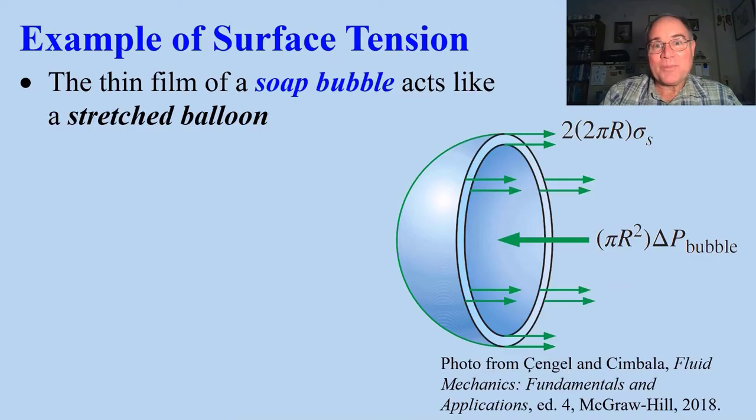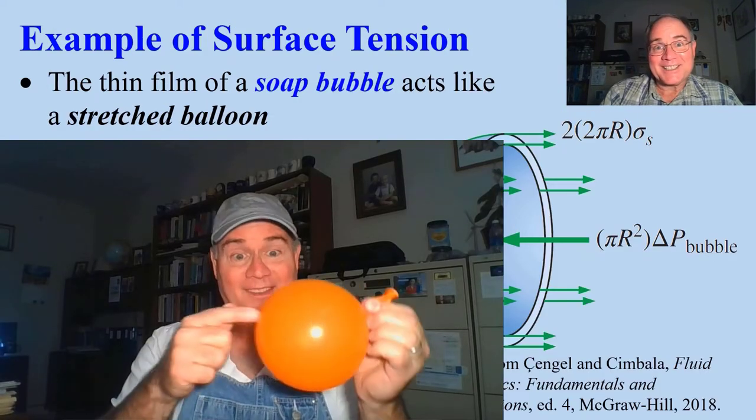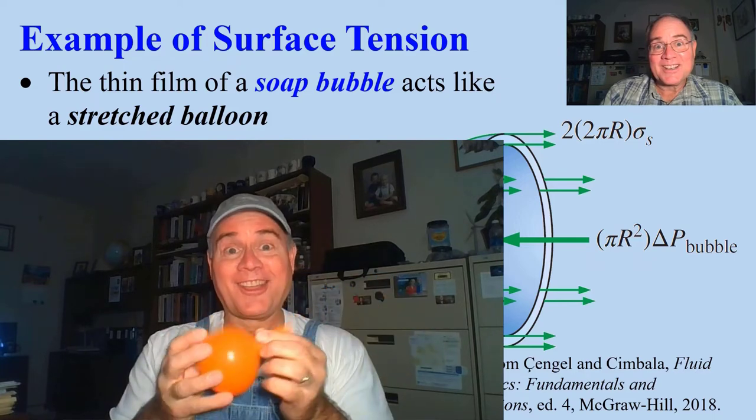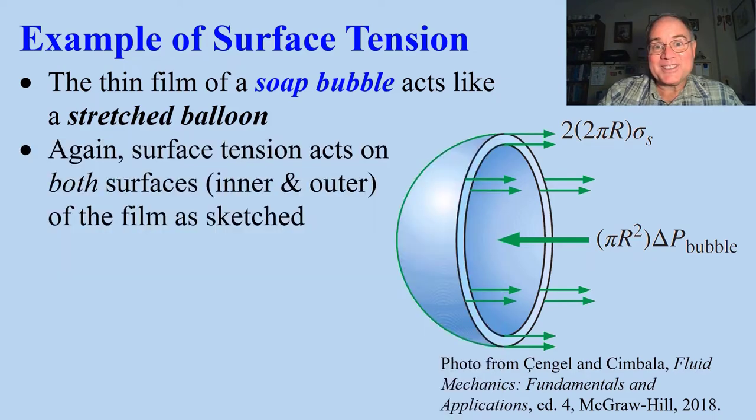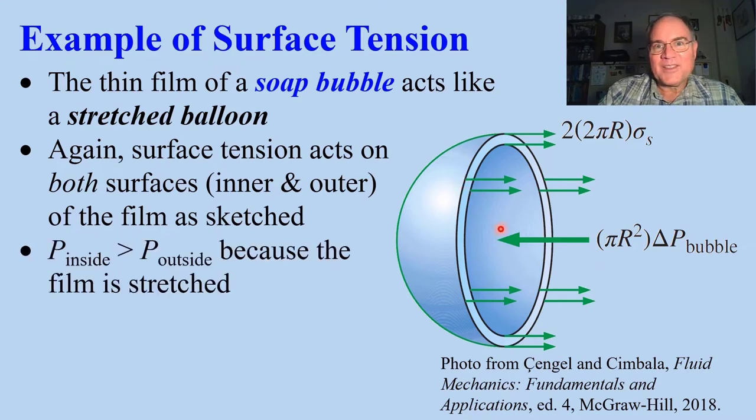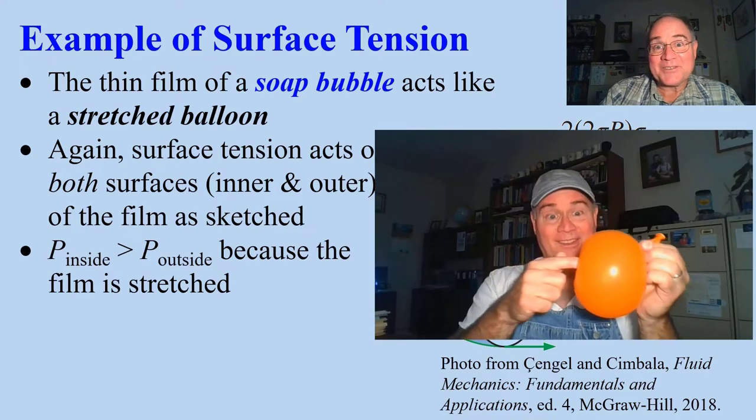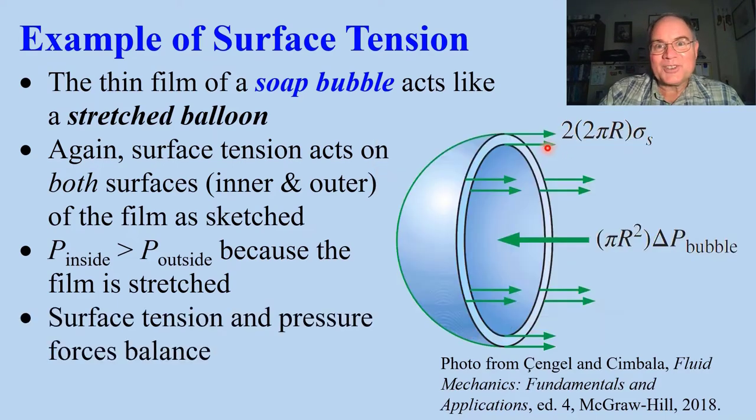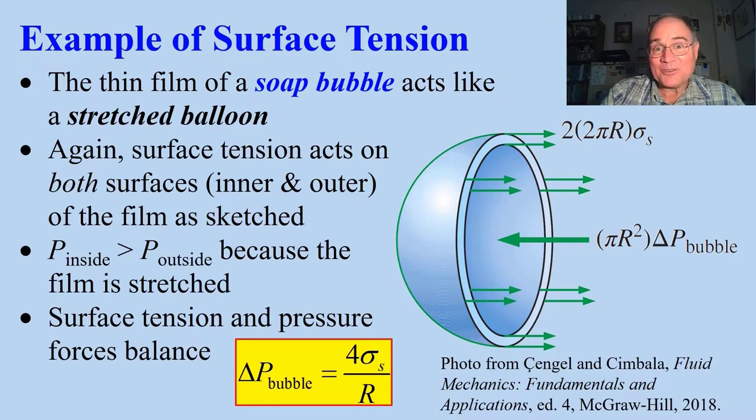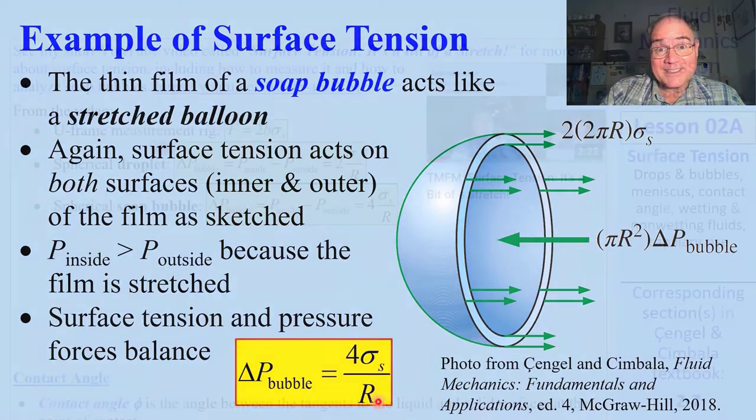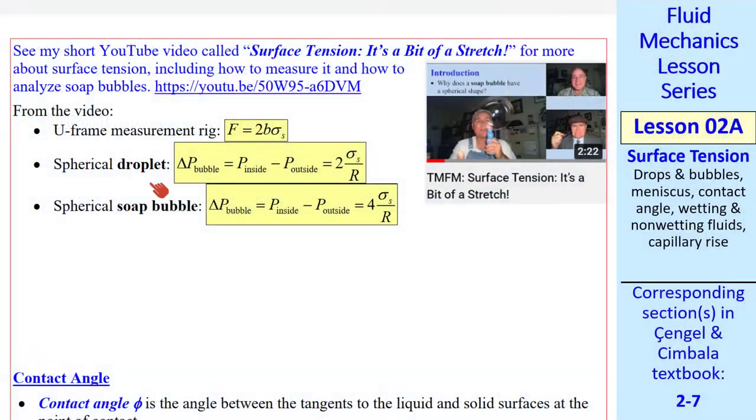A soap bubble is a great example of surface tension. The bubble acts like a stretched balloon. Surface tension acts on both surfaces, this time the inner and the outer surface. The pressure inside the soap bubble is greater than the pressure outside because the film is stretched like a balloon. Surface tension forces and pressure forces must balance. You can easily solve for the pressure difference. Four times sigma S divided by the radius of the bubble. And here are three takeaway equations.